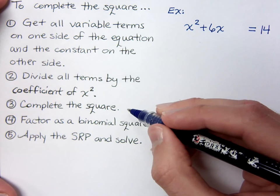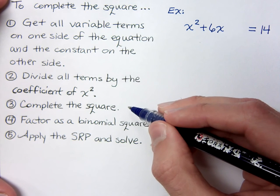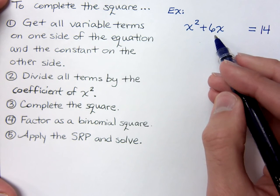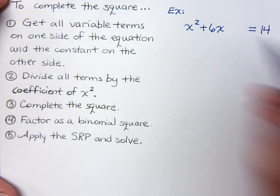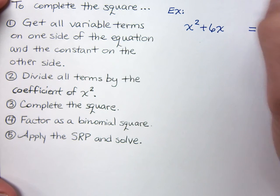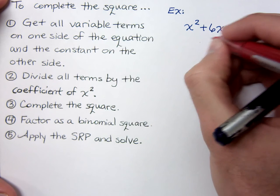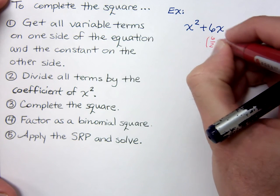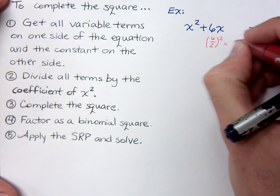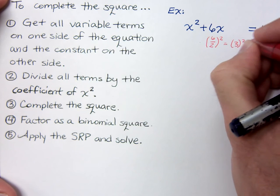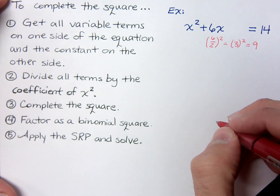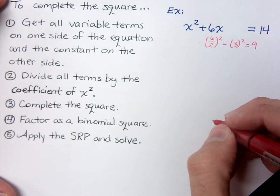The third step is to complete the square — that's when we divide by two and square it. We're talking about this middle coefficient here. So, take six divided by two and square it: that's three squared, which equals nine.